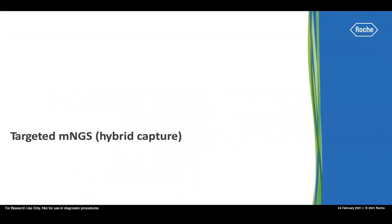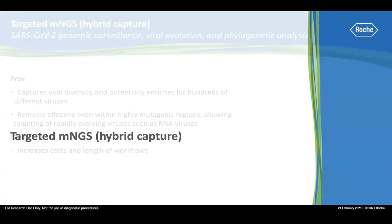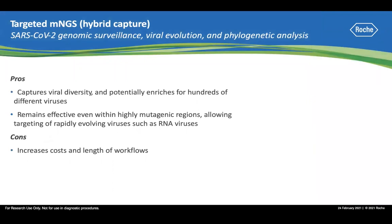Because of the drawbacks with amplicon sequencing — such as only a single variant being targeted, the ends of the genome not being covered, and primer binding site mutations causing amplicon dropout or uneven coverage — hybrid capture workflow is an attractive alternative because it can capture viral diversity and potentially enrich for hundreds of different viruses. It remains effective even with highly mutagenic regions, allowing targeting of rapidly evolving viruses such as RNA viruses. The cons are increased cost and a slightly longer workflow.